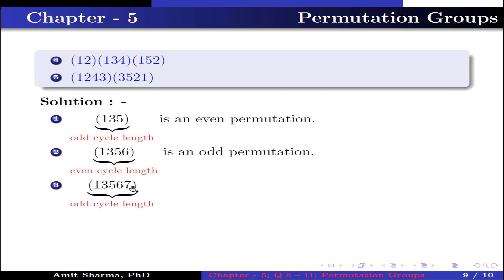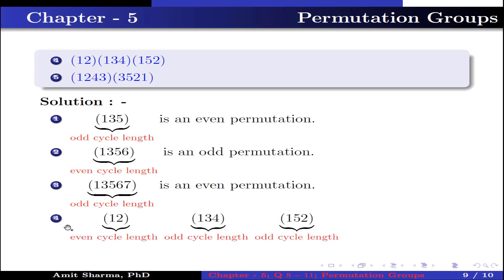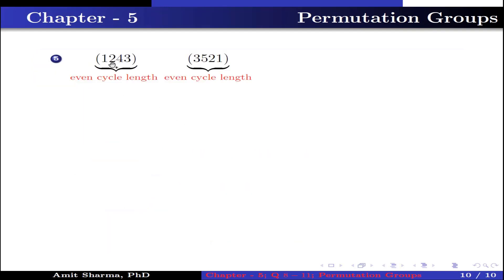For part 3: (1,3,5,6,7) is odd cycle length, so it is an even permutation. For part 4: one cycle is even cycle length — odd permutation; another is odd cycle length — even permutation; another is odd cycle length — even permutation. The product of the two even permutations is even, and that even permutation times the odd permutation gives an odd permutation. So part 4 is an odd permutation. For part 5: both cycles are even cycle length, meaning each is an odd permutation, and the product of two odd permutations is an even permutation.